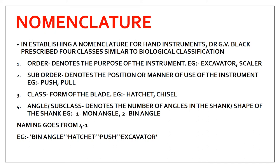If you are naming an instrument, for example a hatchet, it is named in descending order from the four classes. So it would be: bin angle (subclass — two angles), hatchet (class), push (suborder), and excavator (order). That is how a hatchet used in dentistry is named.